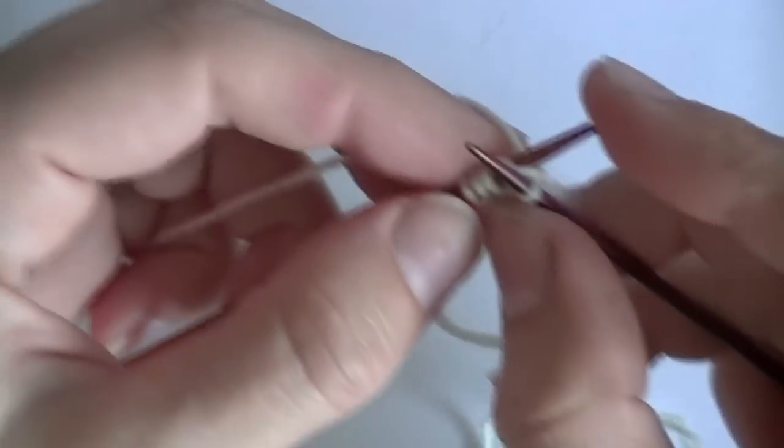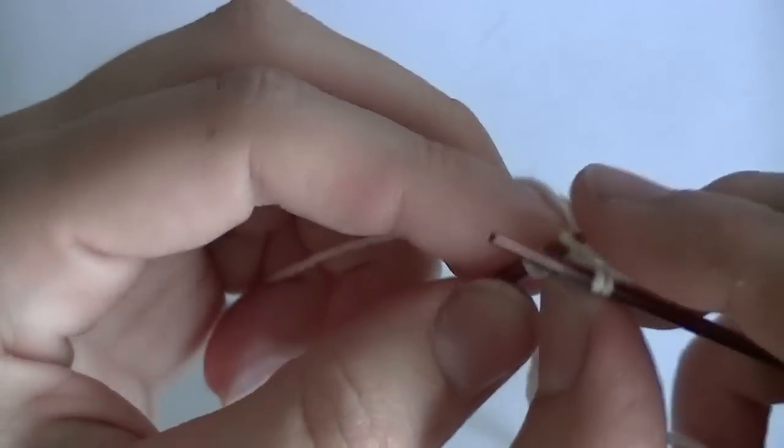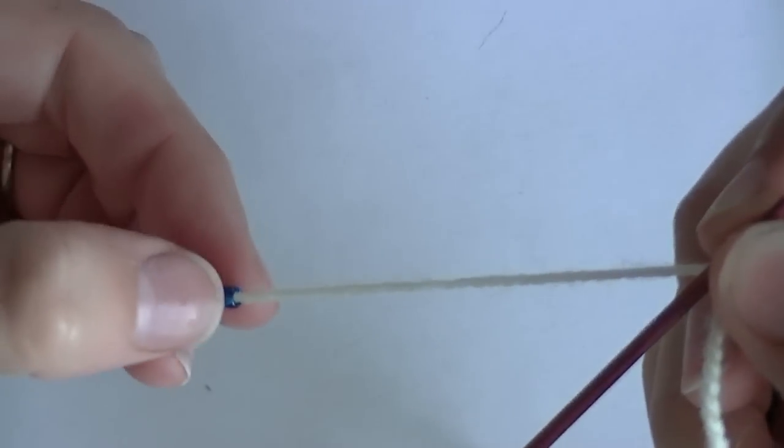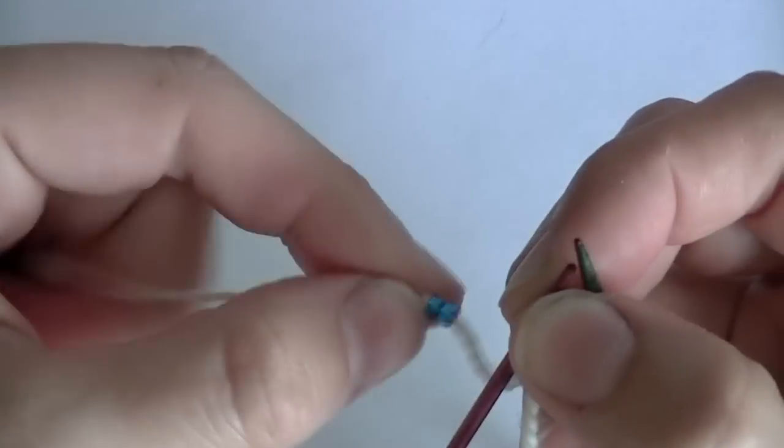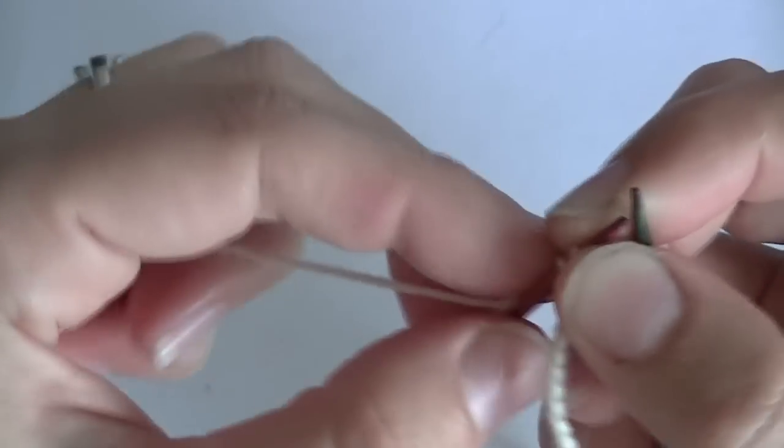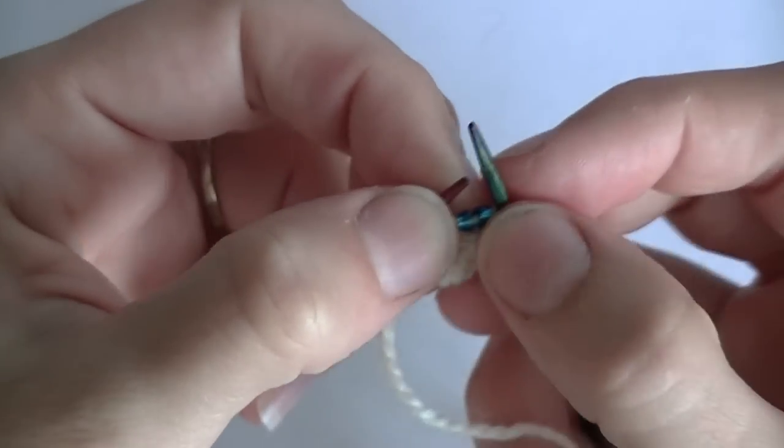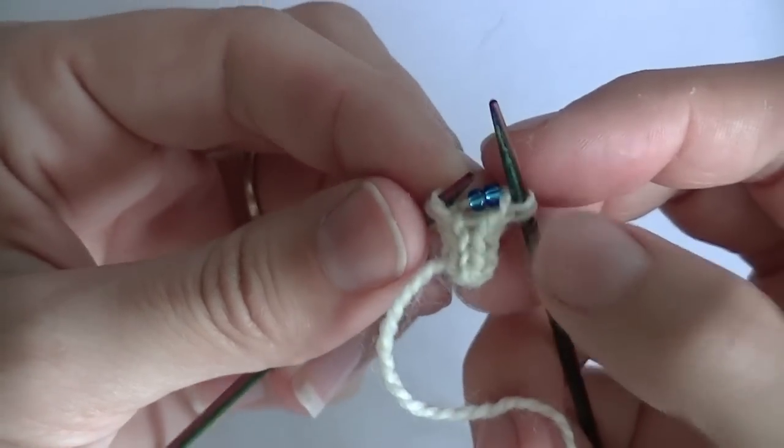So, I'm going to knit two stitches just plain on my I-cord. Then, I'm going to slip up two beads, because I want to have two beads in the middle.